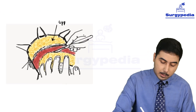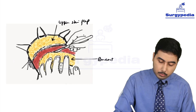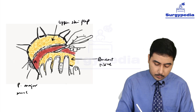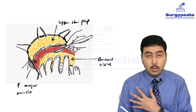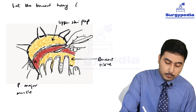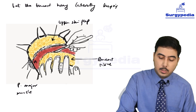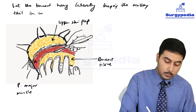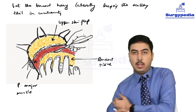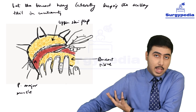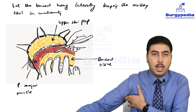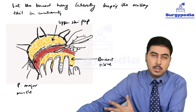In the diagram, the upper skin flap is visible, the breast tissue we are removing is shown, and the red structure is the pectoralis major muscle. We remove the breast along these margins but do not lift it off completely — we let the breast hang laterally, keeping the axillary tail in continuity. In MRM, we not only dissect the breast but also carry out axillary dissection, so before removing the breast we complete the axillary part and remove the whole thing together.